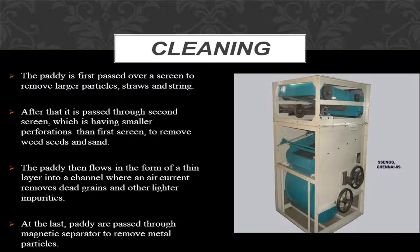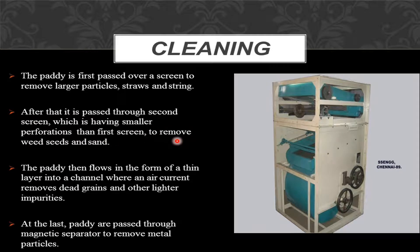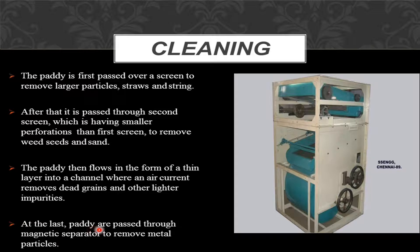The first step is cleaning. The paddy is first passed over a screen to remove larger particles, straws, and strings. After that it is passed through a second screen with smaller perforations to remove weed seeds and sand. The paddy then flows as a thin layer into a channel where an air current removes dead grains and lighter impurities. Finally, paddy is passed through a magnetic separator to remove metal particles.